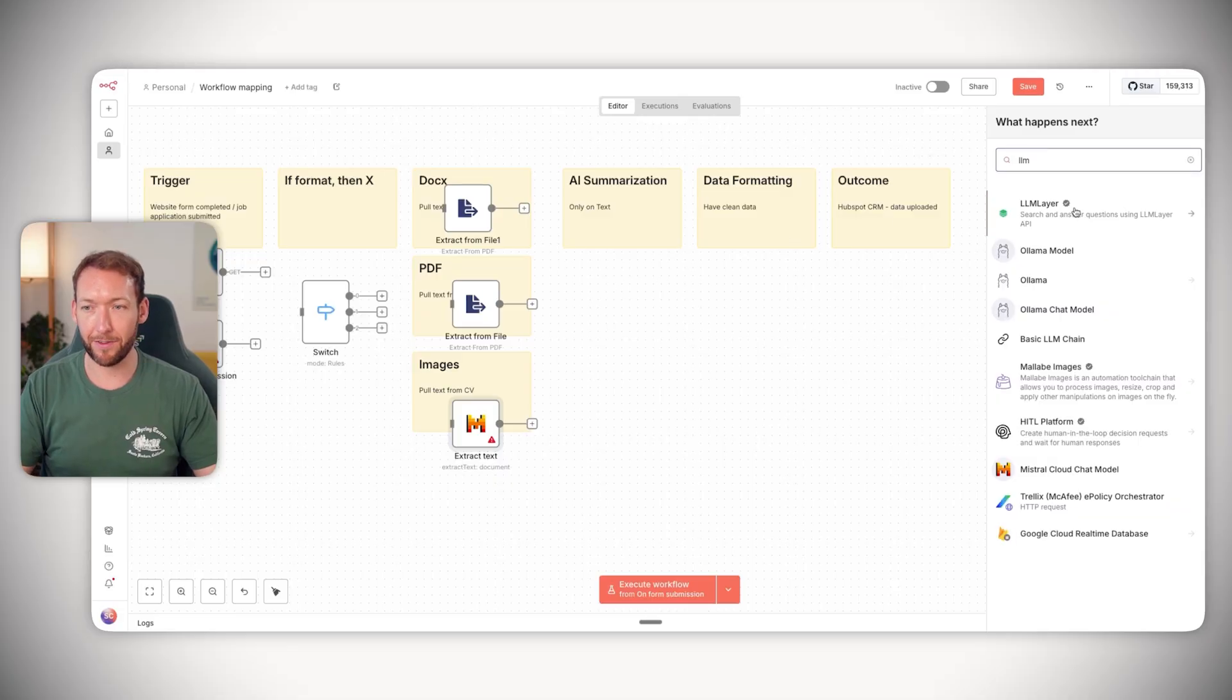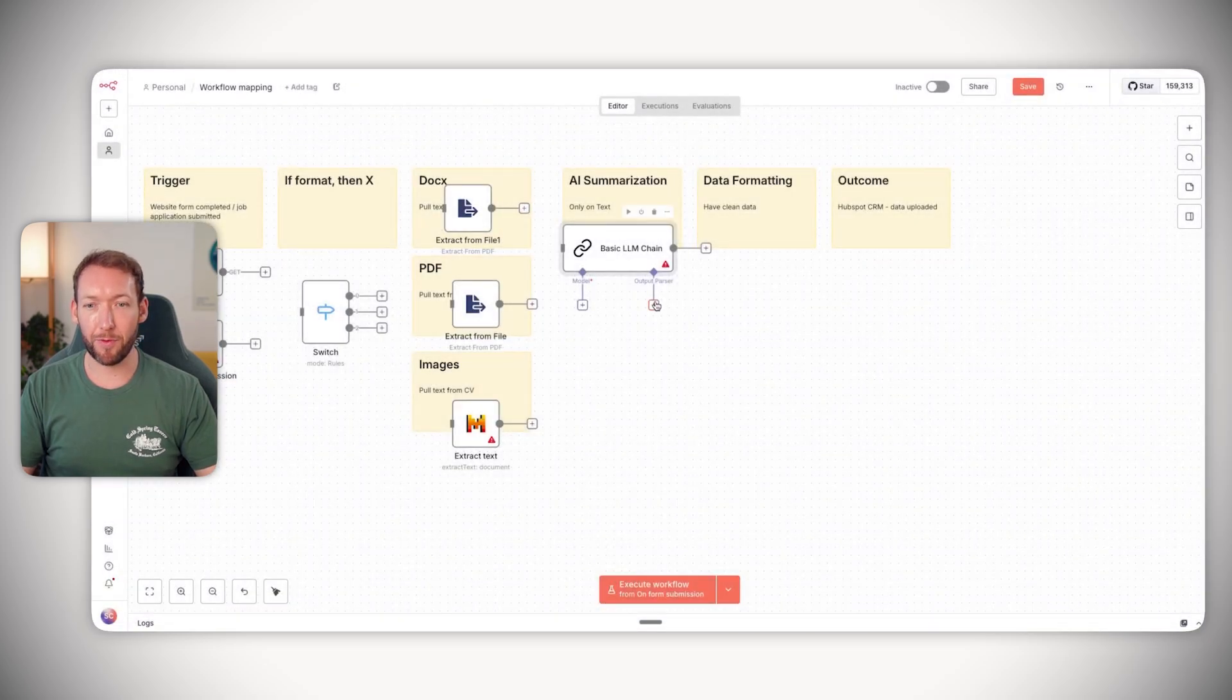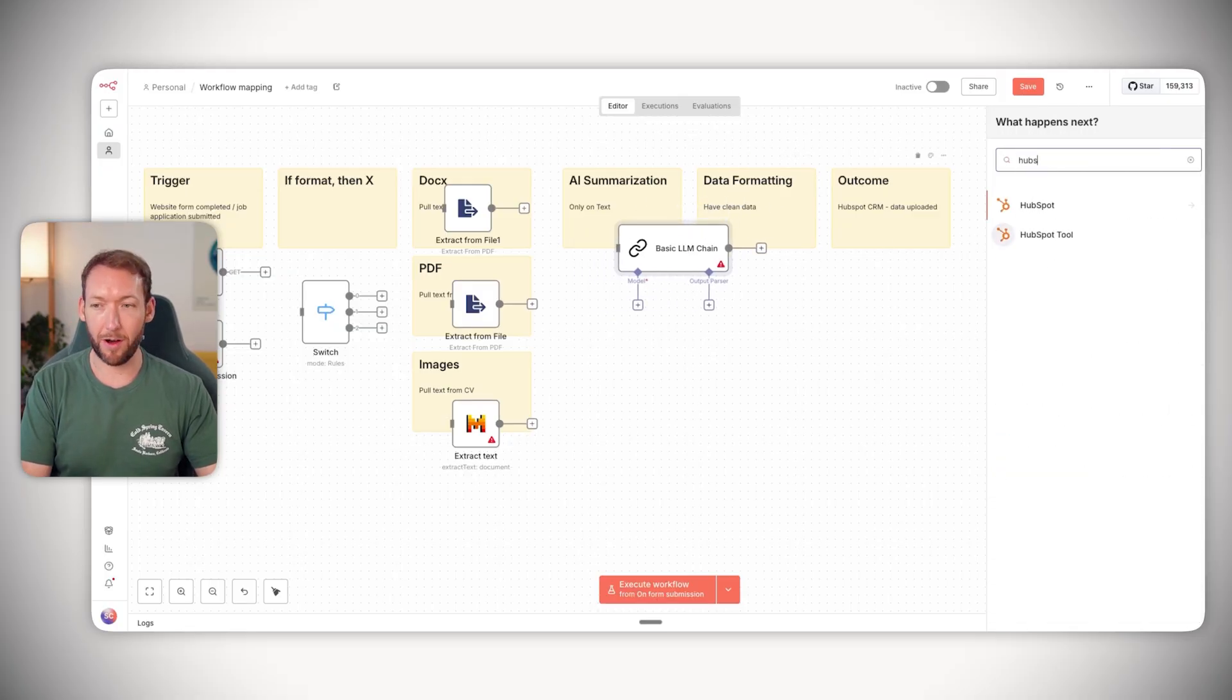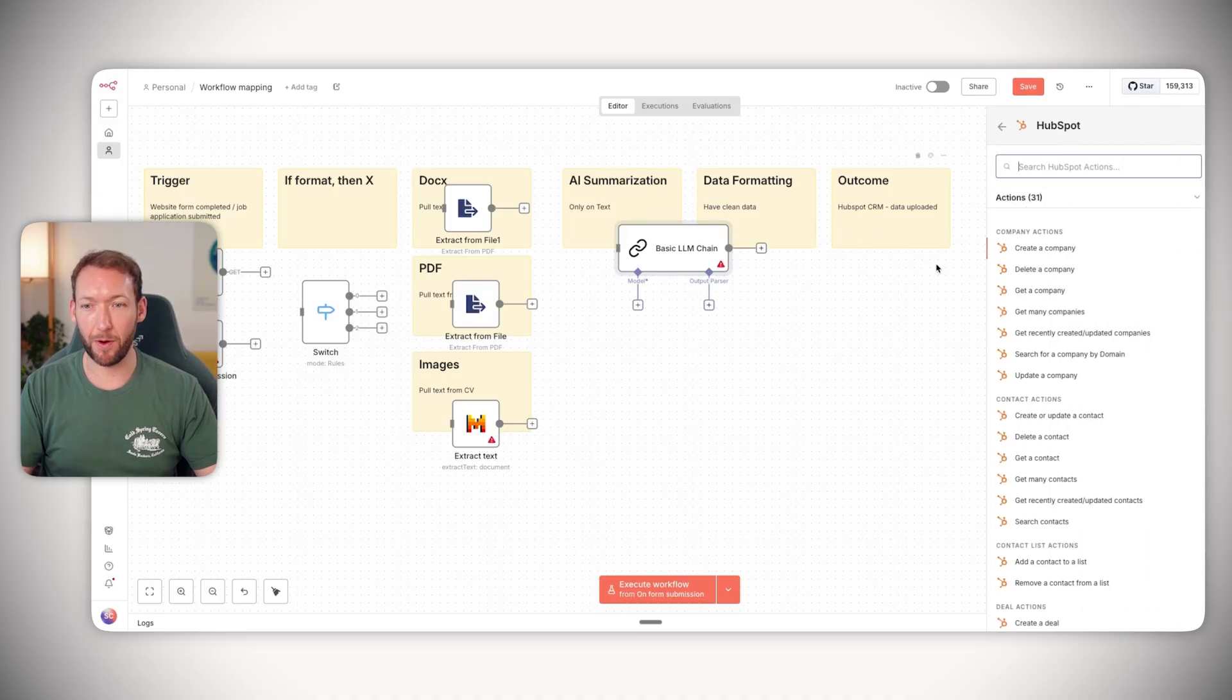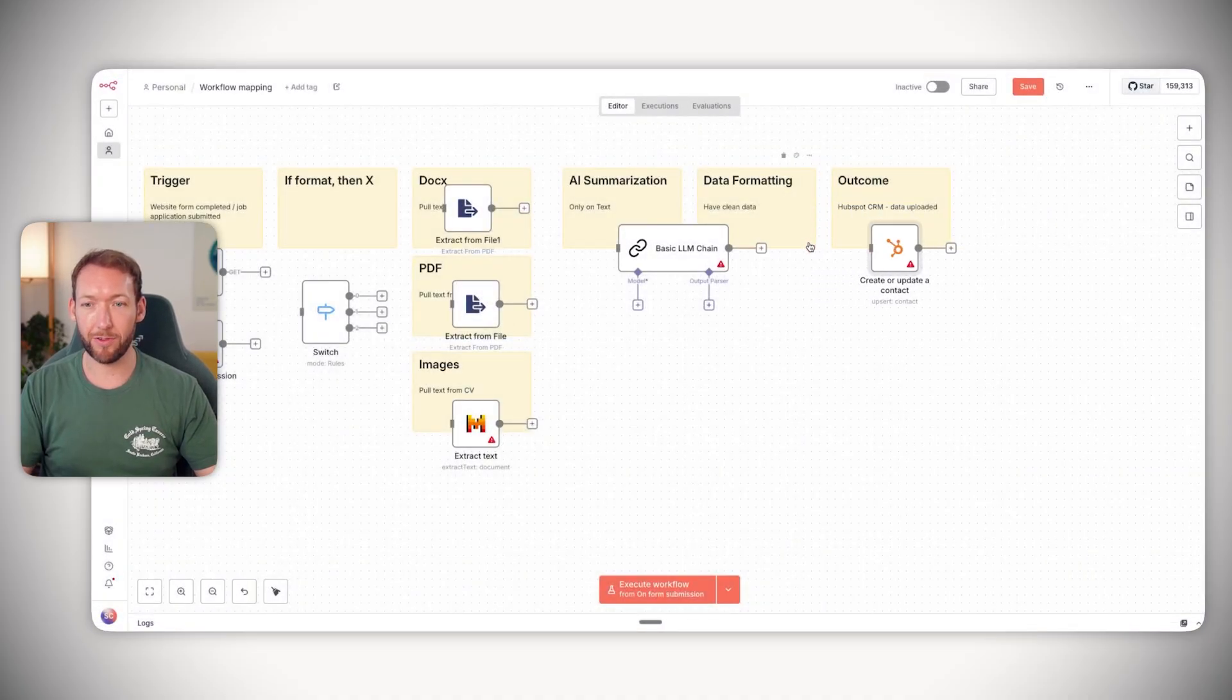We're then going to have some sort of LLM chain to actually summarize in here. And what we'll do is we'll require a specific output format. So we have this output parser that gives us this clean data, so we don't necessarily have to have this data formatting stage. And then what we're doing is uploading our information into HubSpot. And we'll do create or update a contact. And then we'll obviously add in all our credentials.